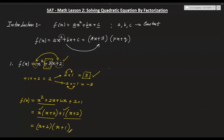In summary: f(x) equals x squared plus 3x plus 2. Once you factorize it, you get (x + 2)(x + 1). That is the complete factorization of that quadratic function.